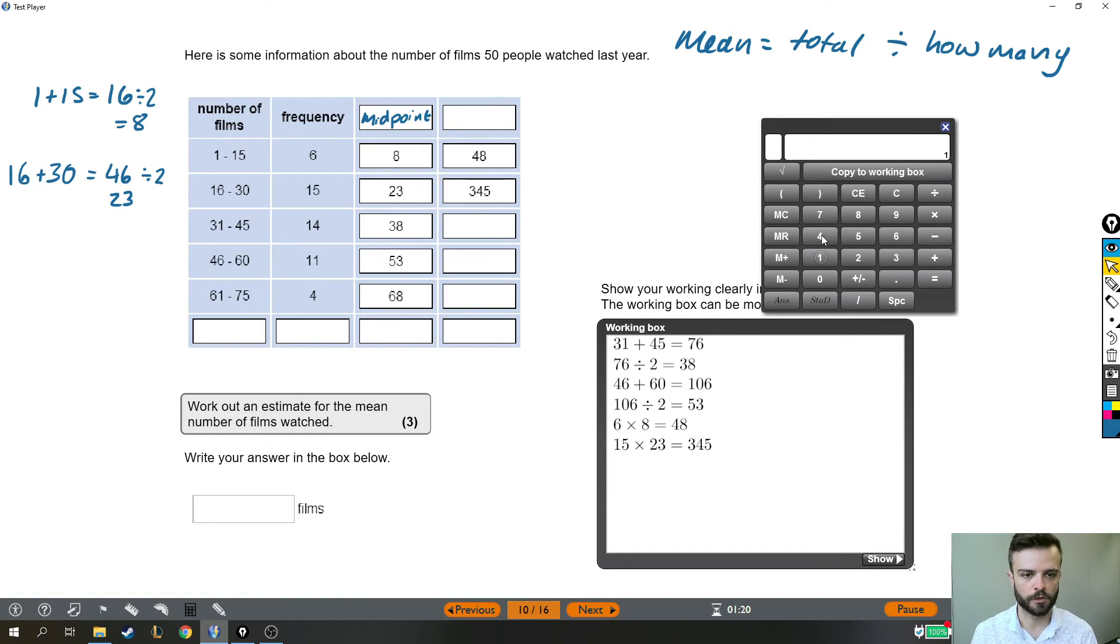Next, we've got 14 people who watched, we're going to say 38 films, which means they watched 532 films altogether. You've got 11 people who watched 53 films, which is 583. And finally, you've got 4 people who watched between 61 and 75, we're going to call it 68. They watched 68 films, which is 272. Now the point of doing this is because we're trying to find the mean, and we need the total number of films that all these people watched together to work out the mean. And now I've got all these mini totals, if I add these together, this would be the total number of films for everybody. So the next thing I'm going to do...